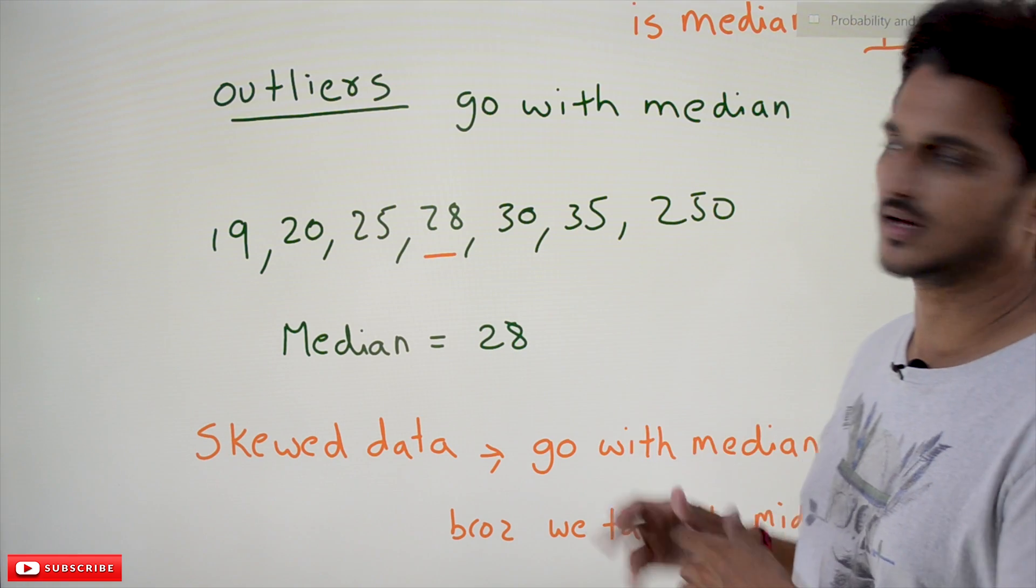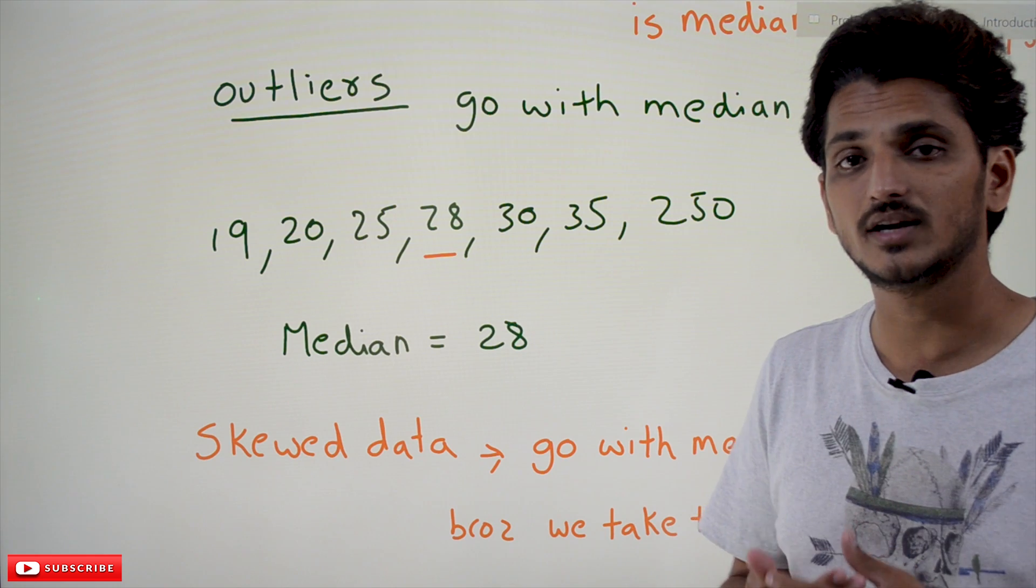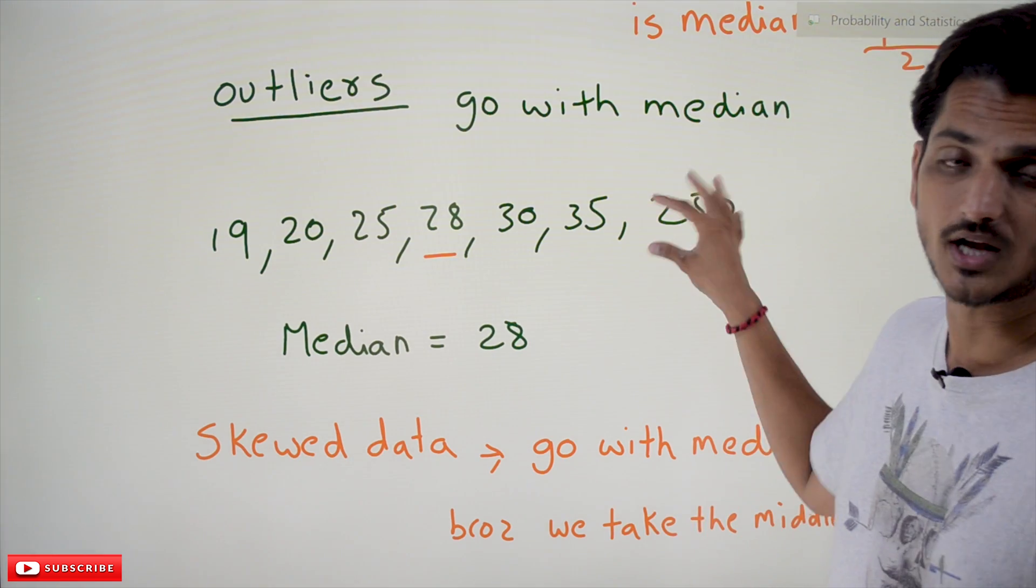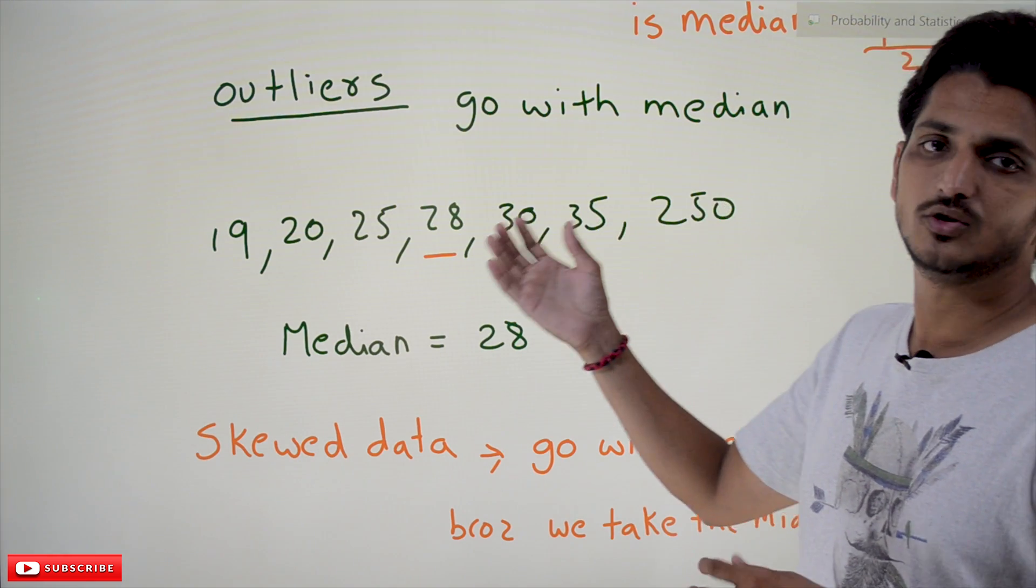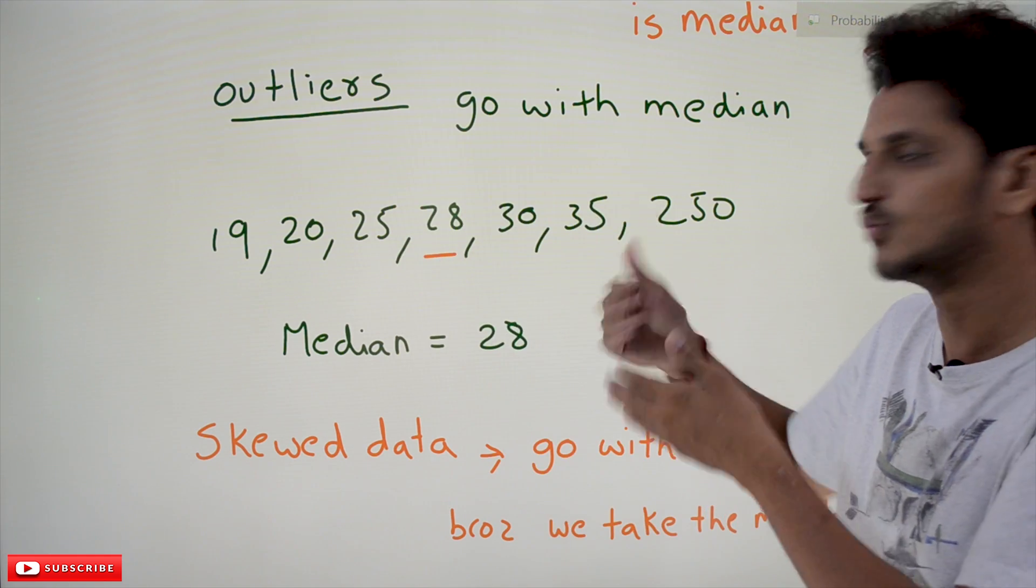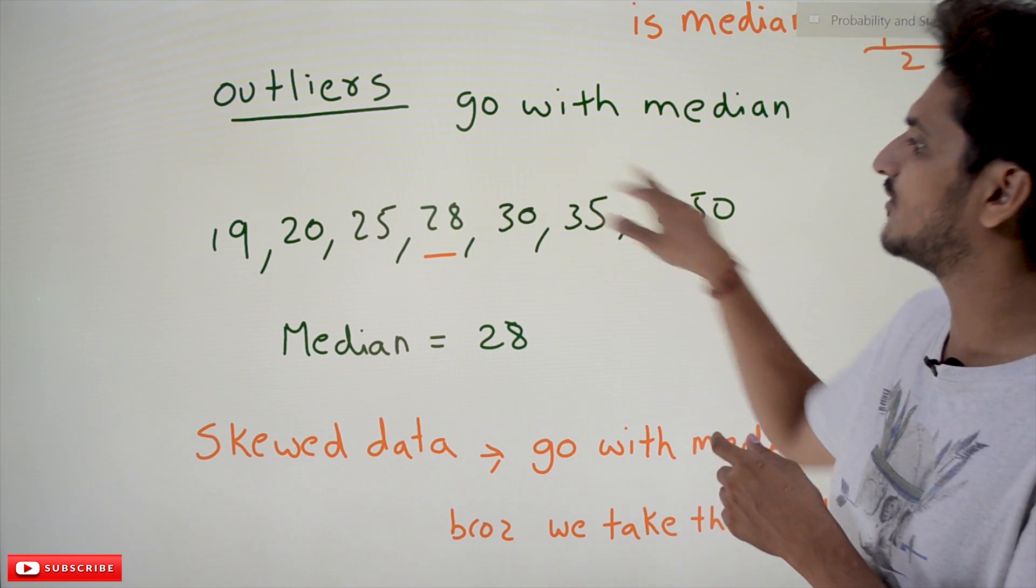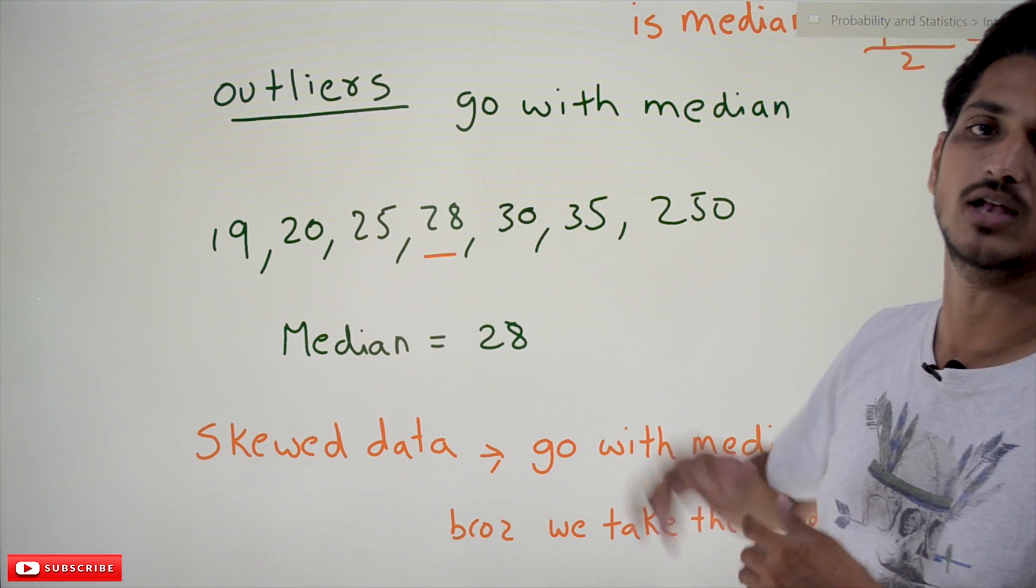If you calculate the mean as a measure of central tendency, this outlier point is going to affect it. If you calculate the mean value, the mean value always moves towards this maximum one because we are adding all the values and dividing by the number of values.